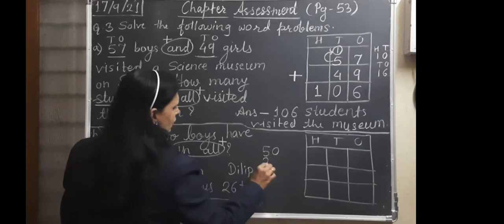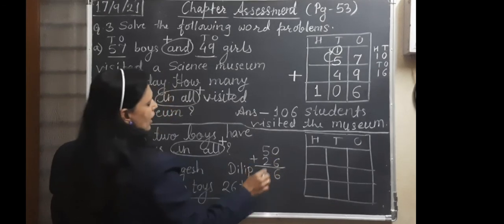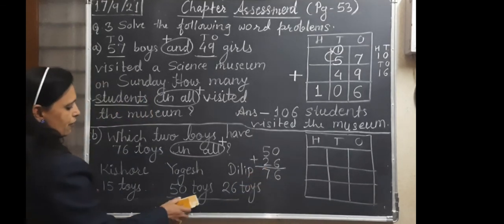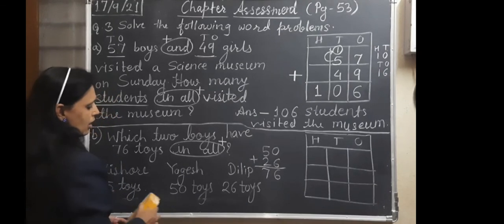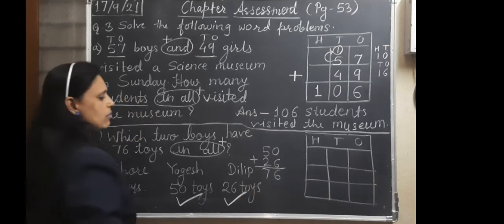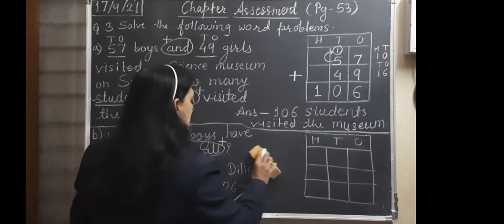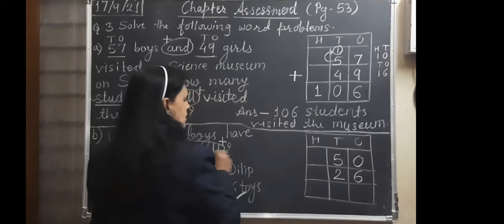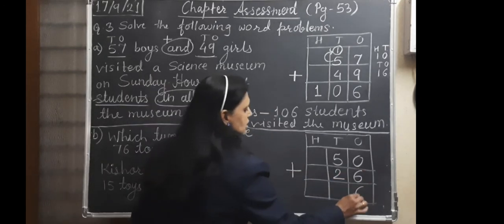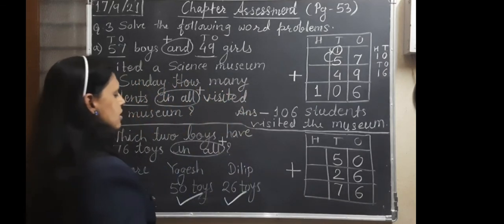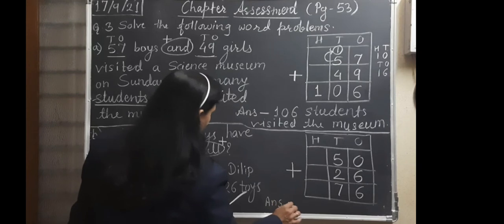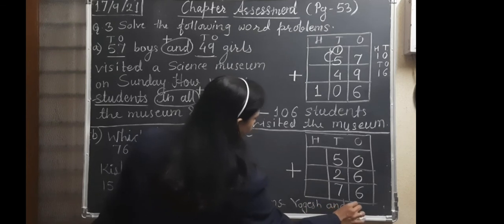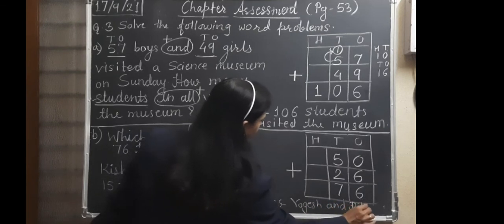Now what we will do? Next two numbers we will take: 50 and 26. So we will do it here. 50 and 26. 6 will come here. 5 keep it in your mind. 2 on your finger. 6 and 7. So here, our answer is coming. So 50 and 26 number we have to take. Now, 6 and 7. 76 is there. So your answer is Yogesh and Dilip.